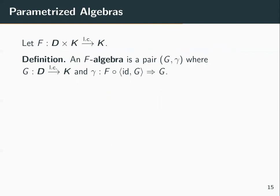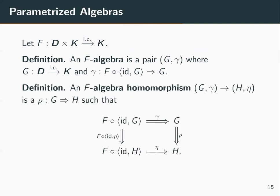The way we check if fixed points are canonical is by seeing if they define initial algebras and terminal coalgebras. Given a functor F from D × K to K, an F-algebra is a pair (G, γ) where G is a functor from D to K and γ is a natural transformation from the composition of F and G to G. An F-algebra homomorphism from (G, γ) to (H, η) is a natural transformation ρ such that the square on the slide commutes. These form a category, and dually we define a category of F-coalgebras.